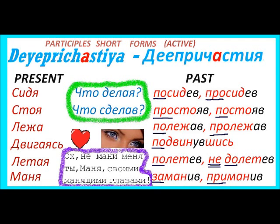Стоя is from the verb стоять. The next is лежа — он читал лежа — he was reading in a lying position, lying. Лежа is from the verb лежать — to lie down, to lie in a horizontal position. For example: он разговаривал по телефону лежа на диване — he was speaking on the telephone lying on the sofa — лежа на диване.